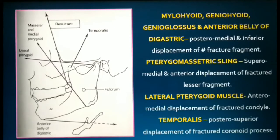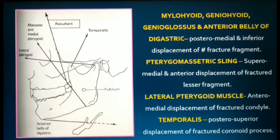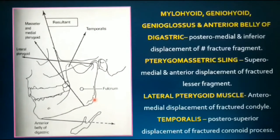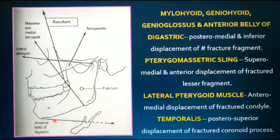The mandible is one bone whose muscle attachments have continuous functioning — be it mastication, speech, facial expressions, swallowing, or yawning. So you cannot expect a fracture to remain still once it has occurred. Displacement is a very common feature, and it is important to understand the action of each muscle on a fracture. The first group, the suprahyoid muscles, exerts a force in the posterior, medial and inferior direction. So if there is a fracture segment in the anterior mandible, it is displaced inward, backward and downward.